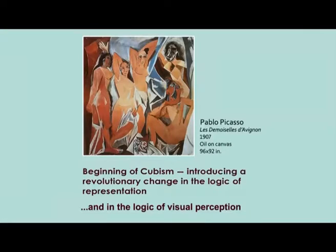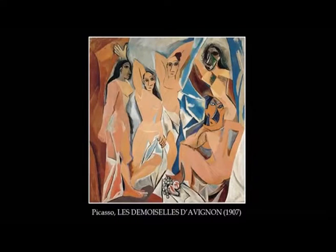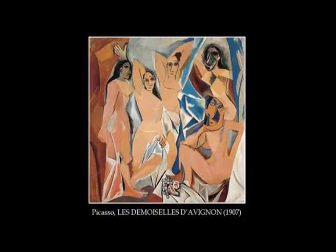This is exactly what Cubist artists like Picasso and Braque are taking advantage of — the fact that visual perception has its knowledge and is not only about depicting reality in a realistic manner. We can fragment objects into various small pieces, we can show an object not as it is but as it is known to us. In 1907, when Picasso came up with the famous painting Les Demoiselles d'Avignon, this was known as the beginning of Cubism, introducing a revolutionary change in the logic of representation as well as visual perception.